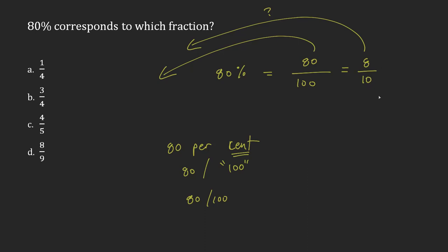What goes into 8 that also goes into 10? Well, 2. 2 goes into 8 4 times. 2 goes into 10 5 times. This is my answer. C is the most simplified version of the fraction 80 over 100.